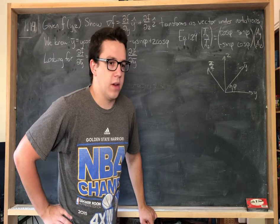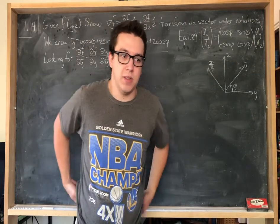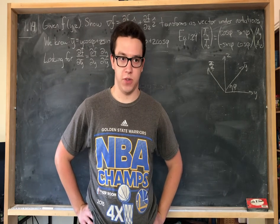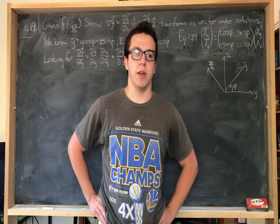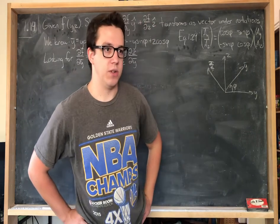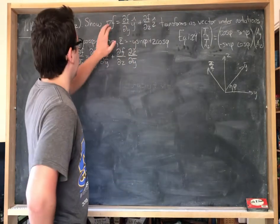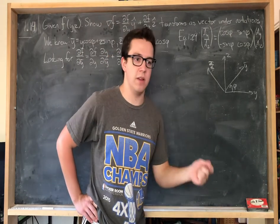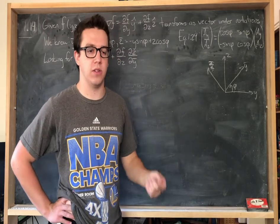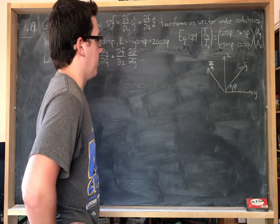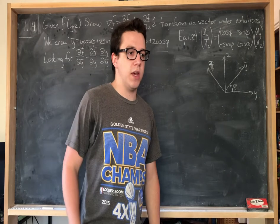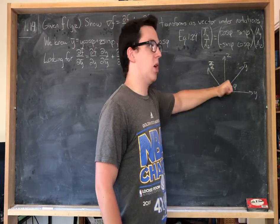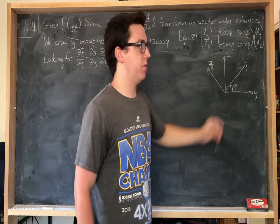What does it mean to transform as a vector? If you're not certain, I highly suggest going back to section 1.5, 'How Vectors Transform,' which gives a detailed explanation. To boil it down: we want to show that the gradient of f is in fact a vector — i.e., it transforms like the displacement vector under the same transformations. In this case, the transformation is a rotation of the yz axes about a common x equals x_bar axis.